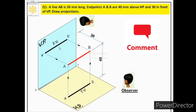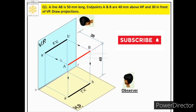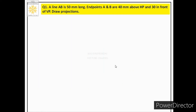We can see that if a line is parallel to any reference plane, its view on that plane will be a straight line of true length. One more important point: the front view is drawn above the top view, or equivalently, the top view is below the front view. Now we will see how to plot this case on paper.